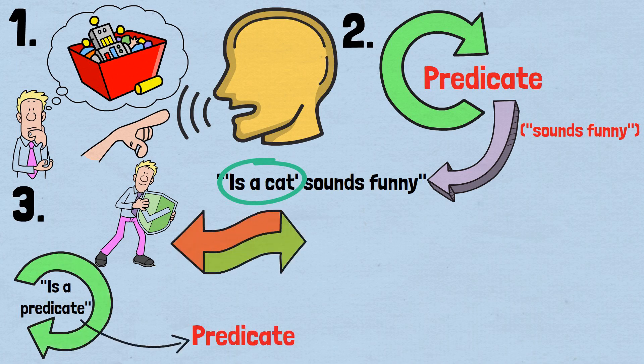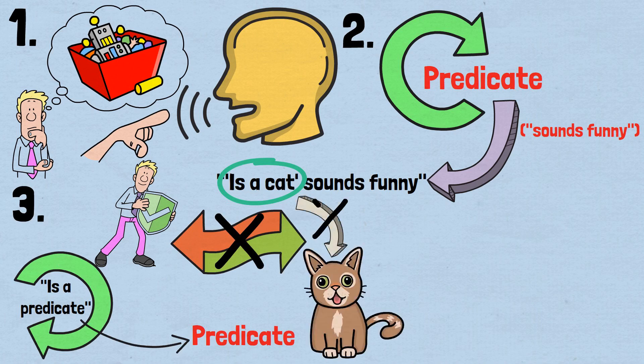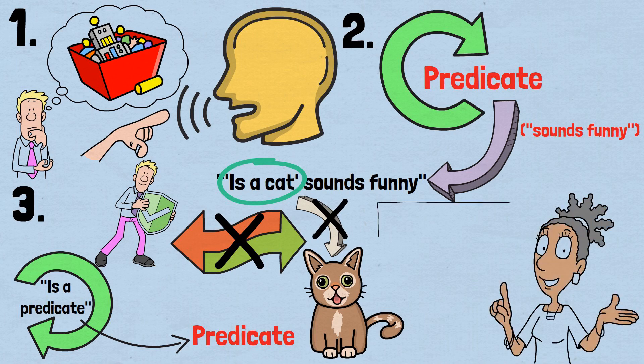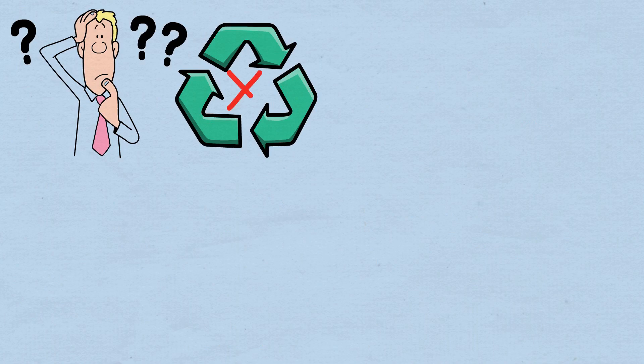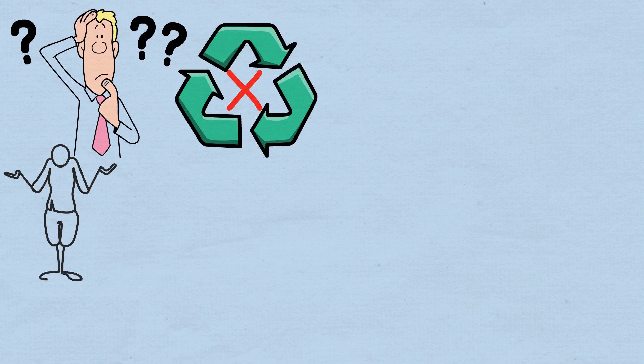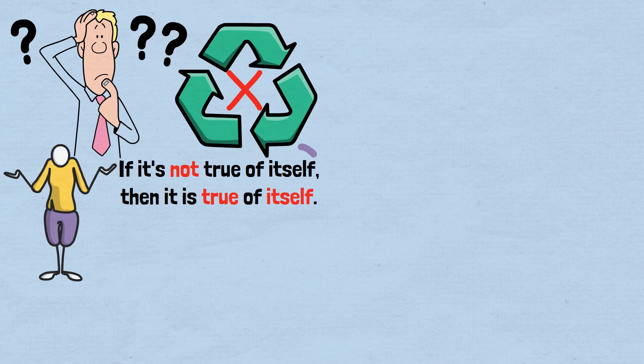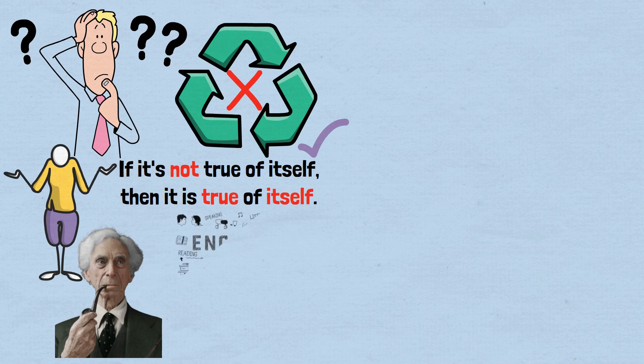Now, let's try to create a predicate that is true of all predicates that are not true of themselves. This predicate would be 'is not true of itself.' The crucial question: is this predicate true of itself? If it is true of itself, then it's not true of itself, because that's what it says about itself. If it's not true of itself, then it is true of itself, because it meets its own criterion. This is Russell's paradox in the realm of language and thought.